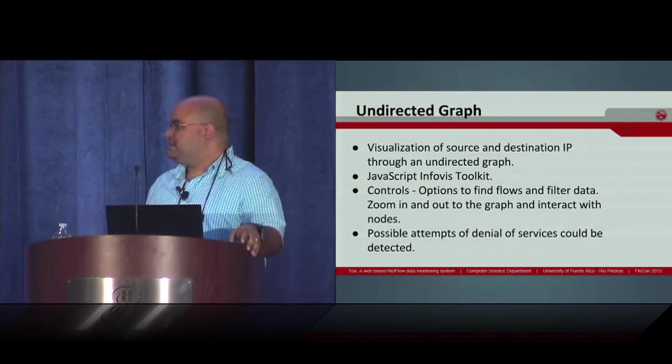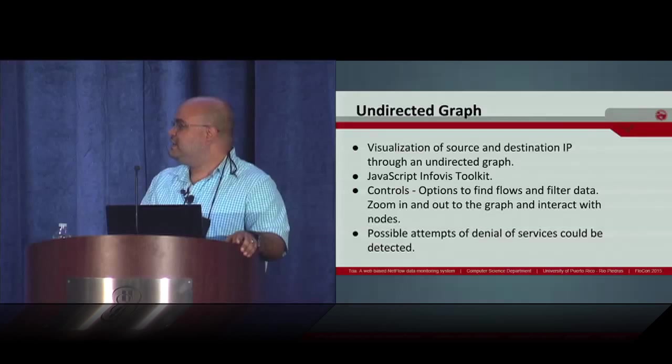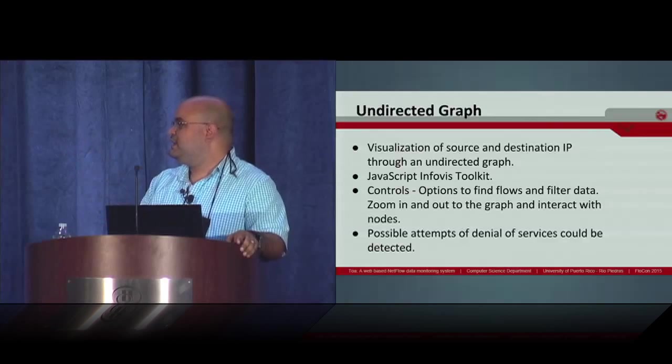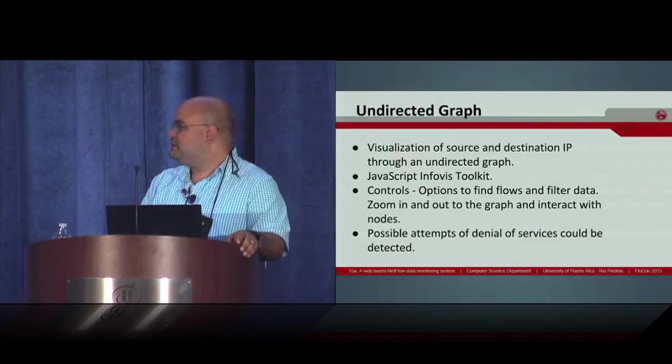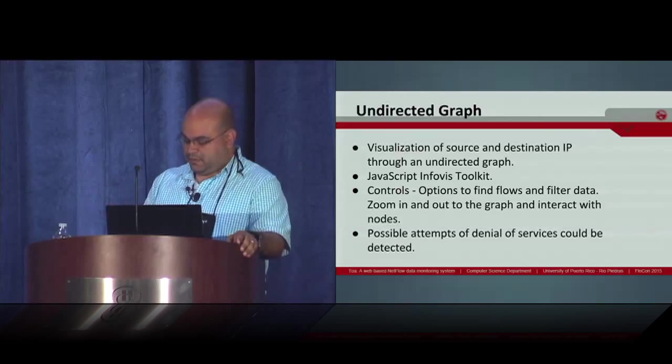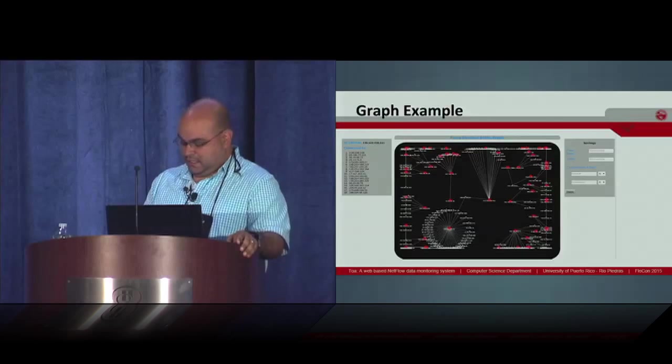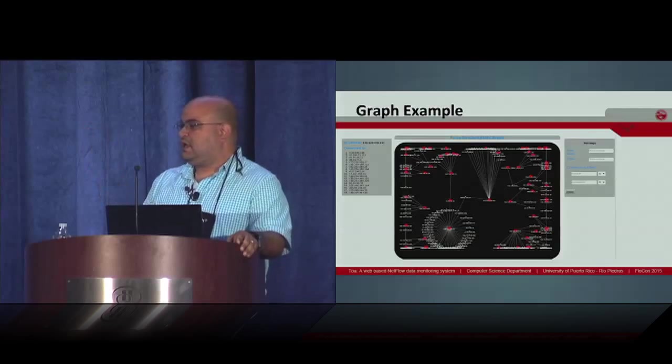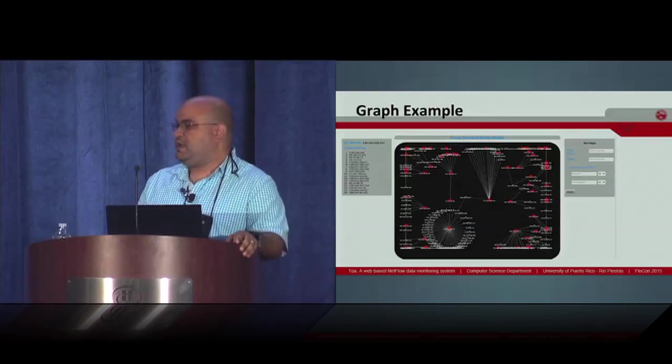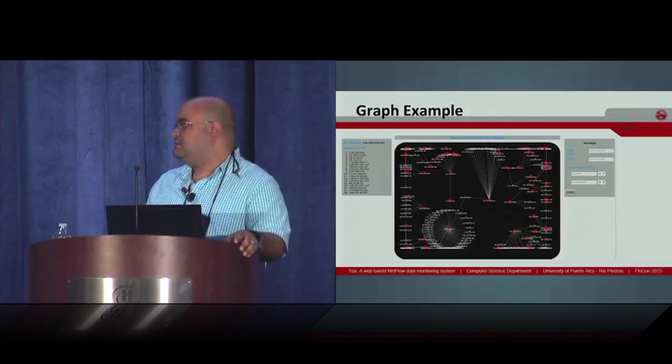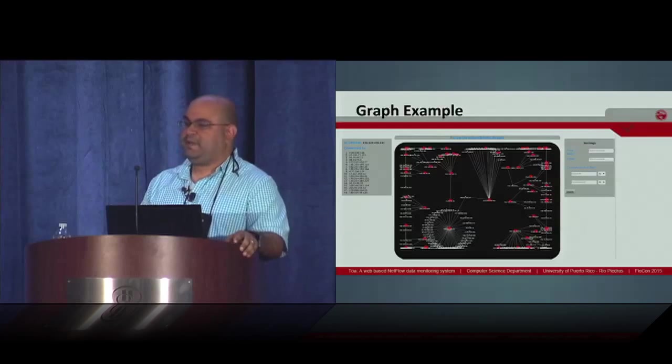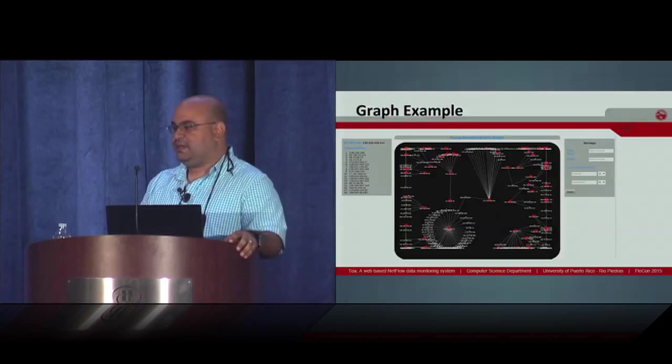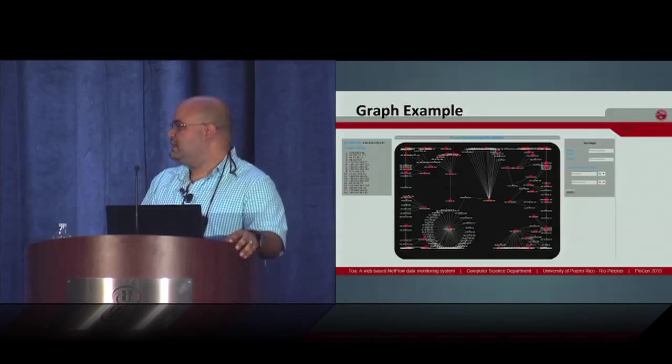The other visualization that we have created so far is just an indirect graph. It is created using the InfoVis toolkit. It also has the controls, and it can be used potentially to detect denial of services. You have all the nodes that are in that period of time, how are they connected. You can easily see that there are some nodes that have many connections, and you can try to determine if they are under a denial of service attack, or if they are a bot or something like that.